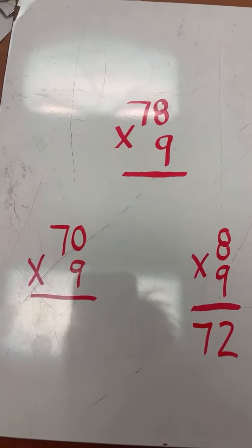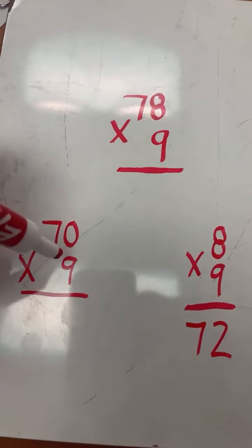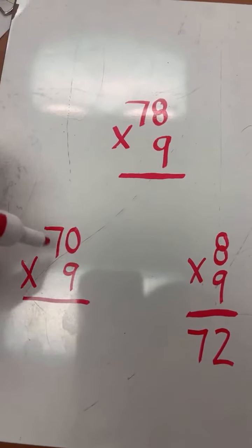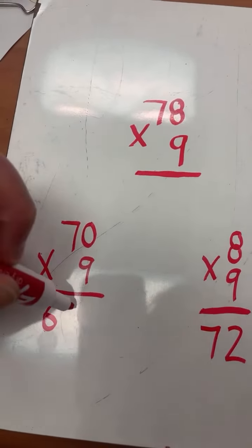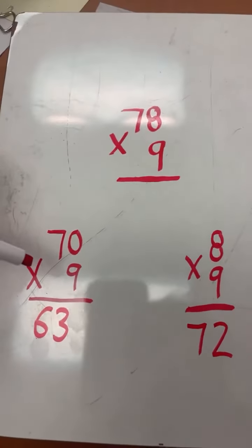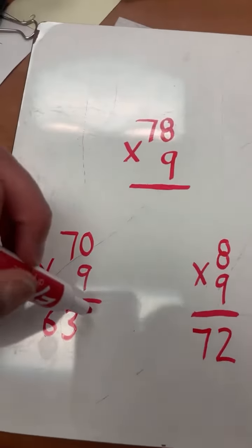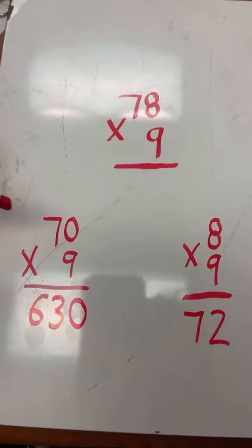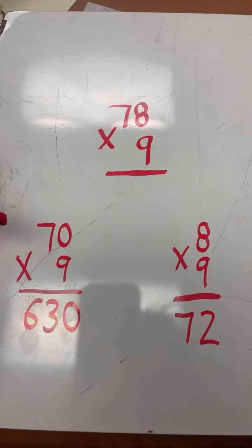So 7 times 9 equals 63. If we add a 0 to our answer, that 63 becomes 630. Now to find the answer to 78 times 9, we simply add together 630 plus 72.